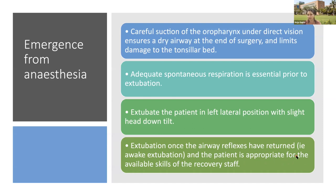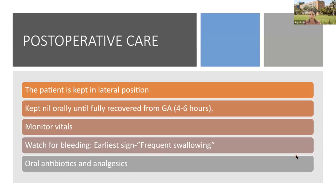For emergence from anesthesia, careful suctioning under direct vision is very important — at the end of surgery the tonsillar bed should always be checked and confirmed to be dry. Suctioning should be done under direct vision to avoid damage to the tonsillar bed. Adequate spontaneous respiration is essential prior to extubation. Extubation should be done in the left lateral position with slight head-down tilt — the tonsil position — and should always be done once airway reflexes have returned, i.e., awake extubation is preferred. The earliest sign of bleeding in such children is frequent swallowing, as children will not complain of something in the mouth.